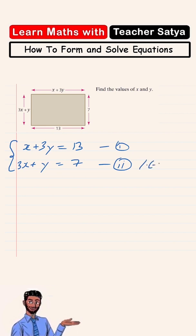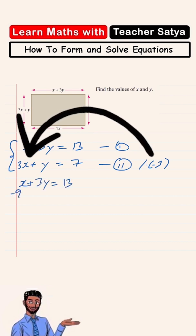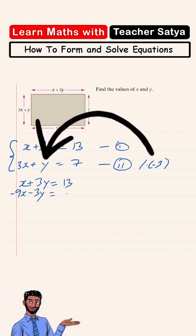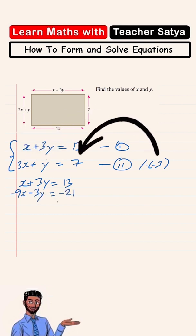I'm going to multiply the second term with negative 3. So the first equation remains the same: x plus 3y is 13. So I'll have negative 9x negative 3y equals negative 21.